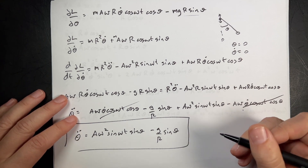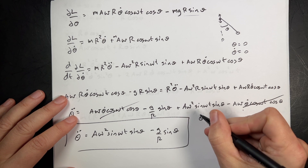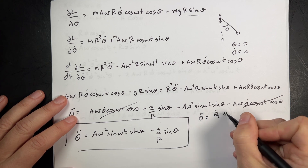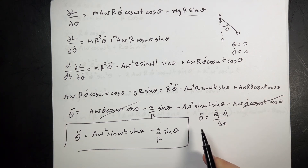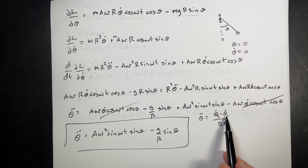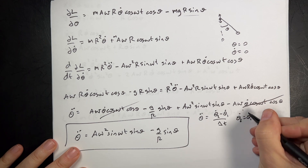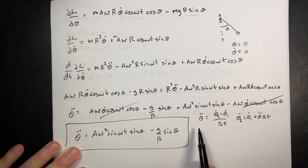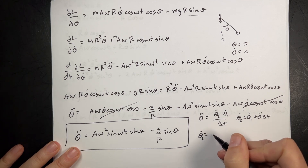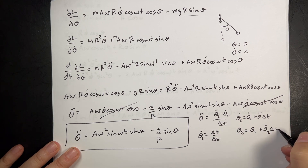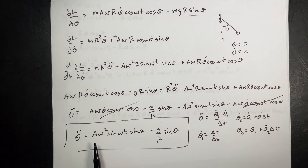Now that I know theta-double-dot, I can use a standard numerical Euler method. Breaking into time steps: theta-dot_2 equals theta-dot_1 plus theta-double-dot times delta t. Then theta_2 equals theta_1 plus theta-dot_2 times delta t. Every time step I calculate theta-double-dot, use that to update theta-dot, use that to update theta, and repeat.